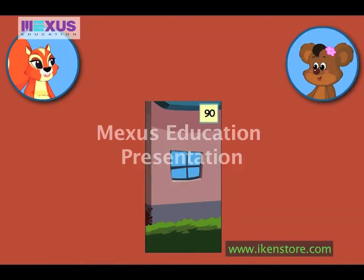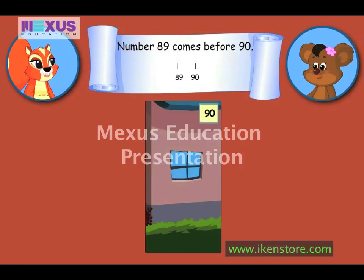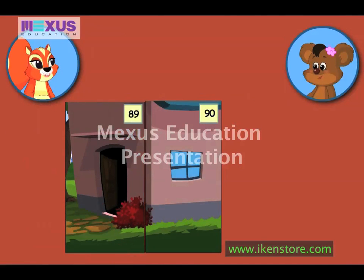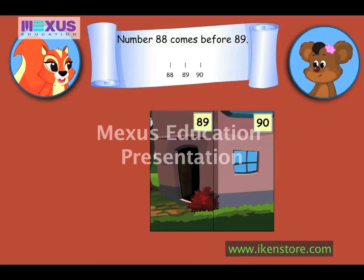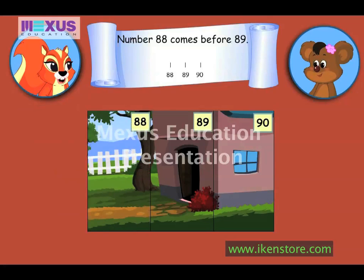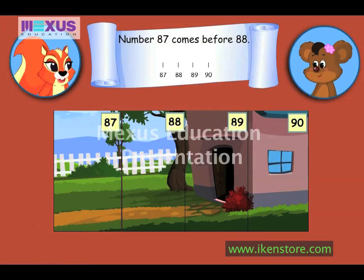This is number 90. And we have to arrange numbers up to 81. So, let's count backward. That is, arrange the numbers from the biggest to the smallest. The number that comes before 90 is 89. Amber, place the piece number 89 to the left of piece number 90. So, the pieces 89 and 90 are in place. Now, can you try arranging the pieces, Amber? Sure. Before the number 89 comes 88. So, let's place the piece number 88 to the left of the piece number 89. Before the number 88 comes 87. Let's place the piece number 87 to the left of 88.